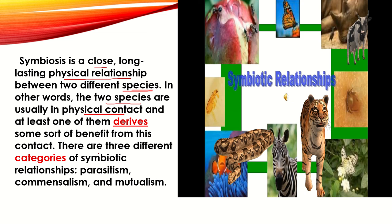There are three different categories, three classifications of symbiotic relationships: number one, parasitism; number two, commensalism; and number three, mutualism.